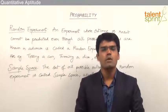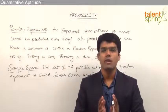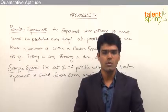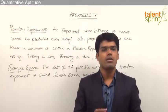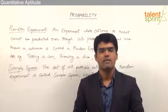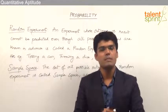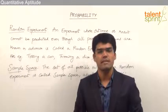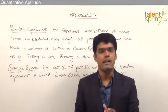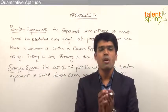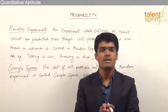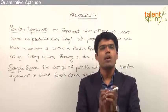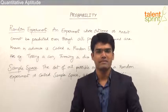So all such events where the output cannot be predicted even though all the possible outcomes are known to us are called random experiments. In the study of probability we always take random experiments into consideration and try to measure what is the possibility or what is the chance of a particular outcome to occur when an experiment is conducted.